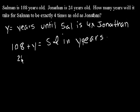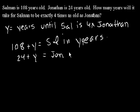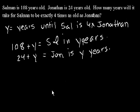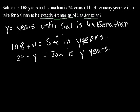And then Jonathan in y years is going to be 24 plus y. And what else does the problem say? It says in how many years will it take for Salman to be exactly — let me put that in another color for emphasis — exactly four times as old as Jonathan? That 'exactly' is important, because Salman is already more than four times as old as Jonathan, but we want to find out exactly when Salman will be four times as old as Jonathan.